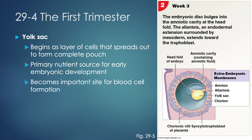The yolk sac starts as a layer of cells that spreads out to form a complete pouch — the primary nutrient source for early embryonic development. During IVF monitoring, the instructor could see the yolk sac appearing even bigger than the embryo at early stages. The yolk sac is also an important site of blood cell formation for the developing embryo.